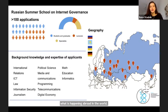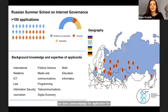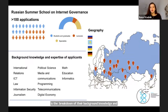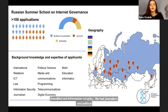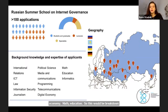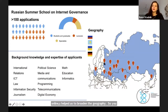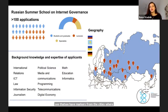The breakdown of background knowledge included people from IR, ICT in general, law, information security, journalism, political science, programming, digital economy, math, and education. Since the school was online, it helped us to broaden the geography. We have markers from cities all over Russia where we got applications. If we did this only around Moscow, we would just have Moscow participants, which is not very good. We also have people from CIS countries — Kazakhstan, Ukraine, even Germany from Russian-speaking expats.